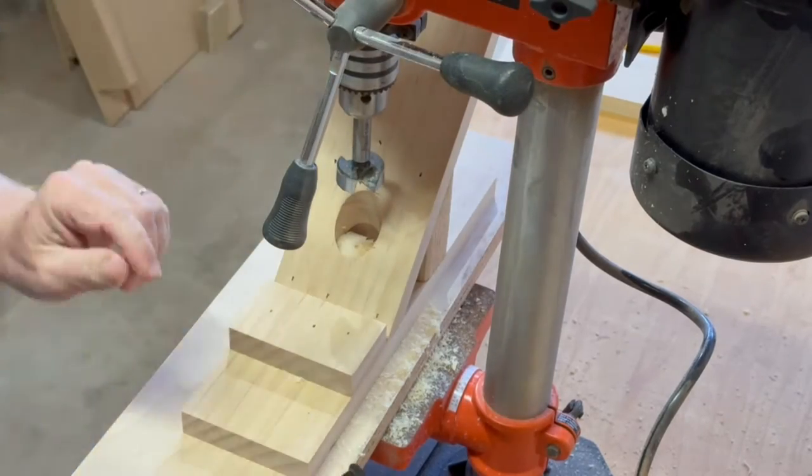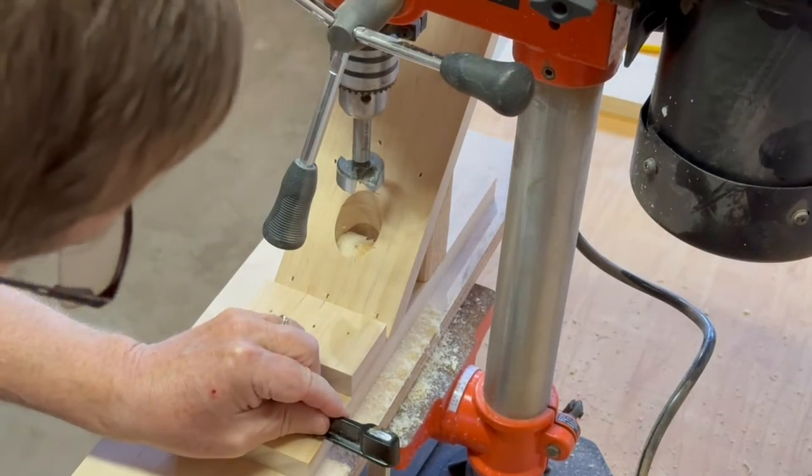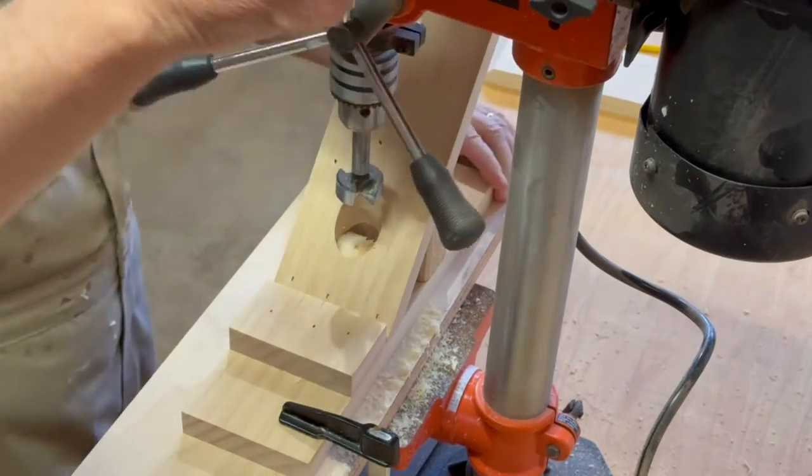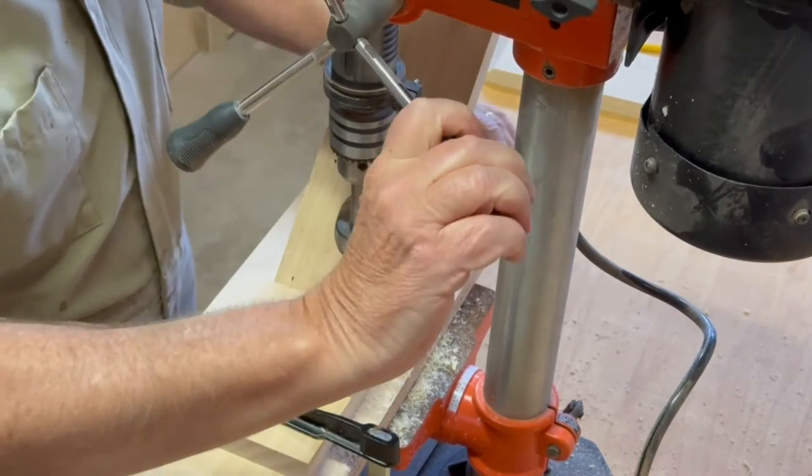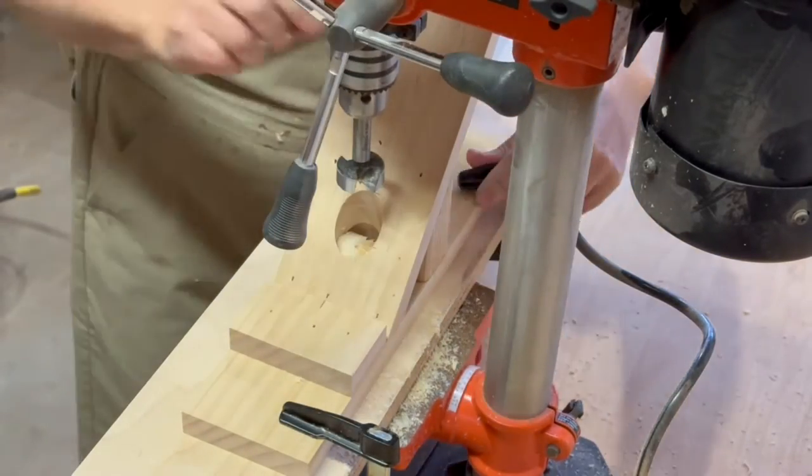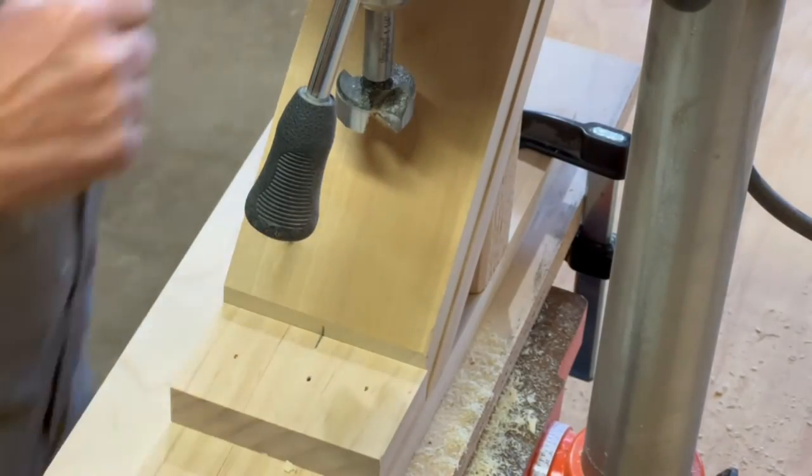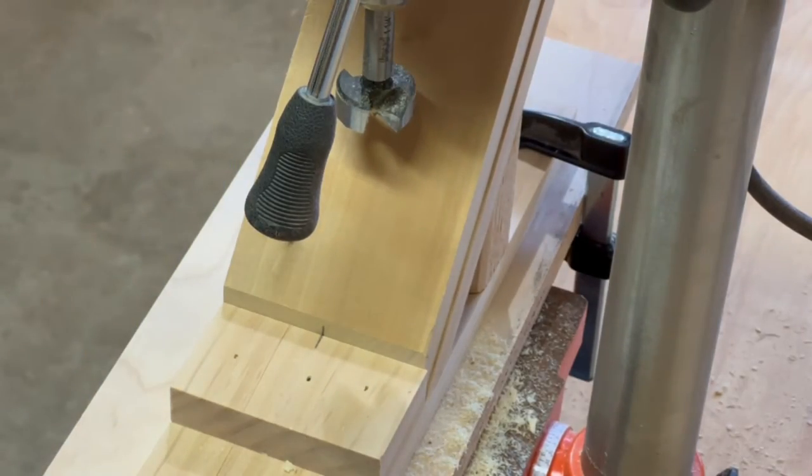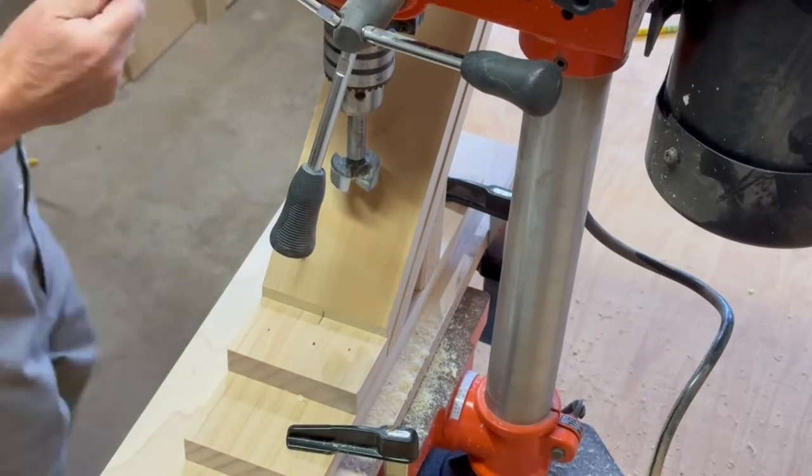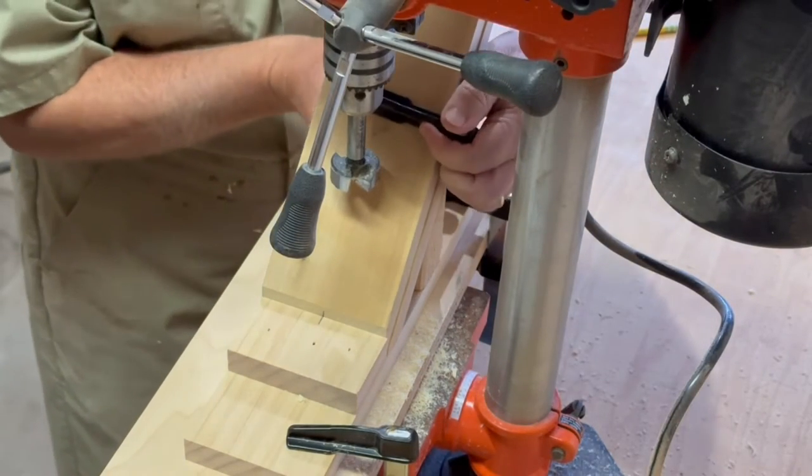So here's the process to use this jig. First line up the drill bit with the pilot hole in the jig and then clamp the jig down to the drill press base. Then line up the center line of the workpiece with the center line of the jig and clamp down the workpiece to the jig and we're ready to drill the hole.